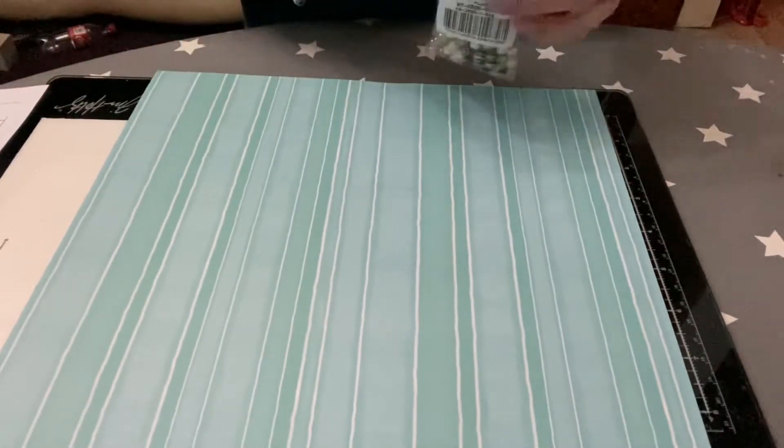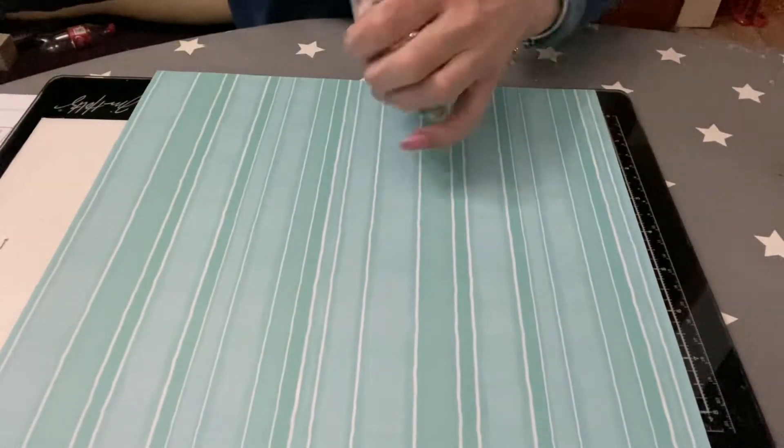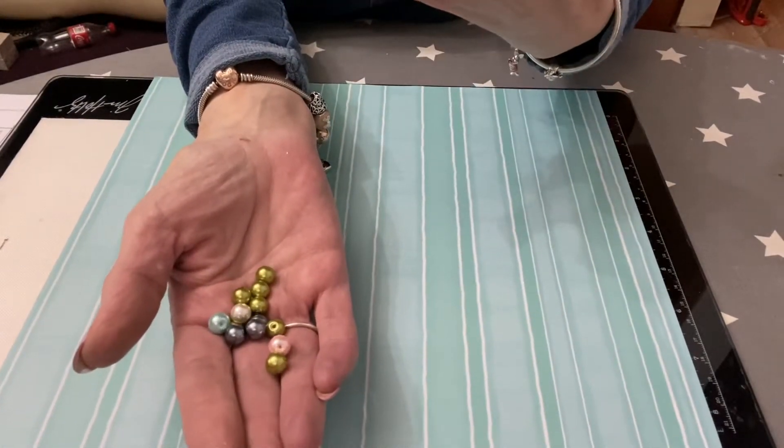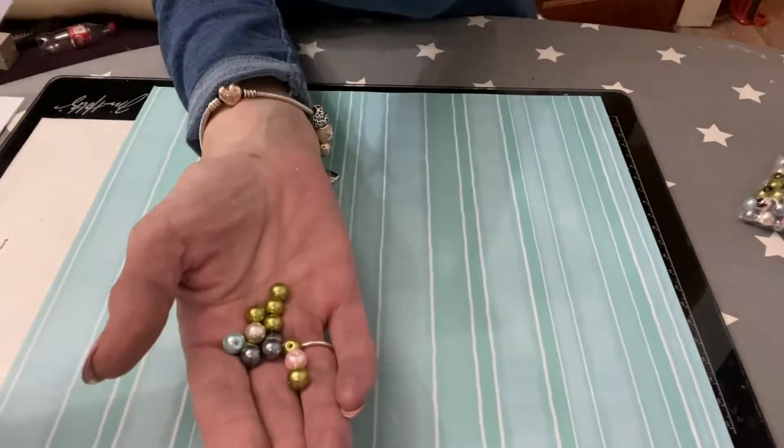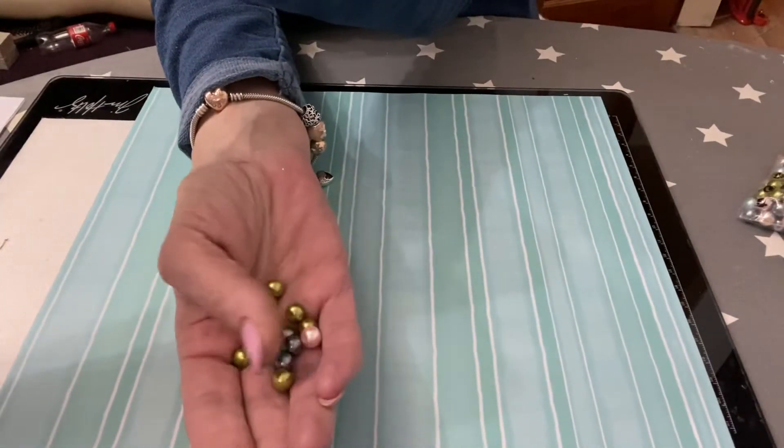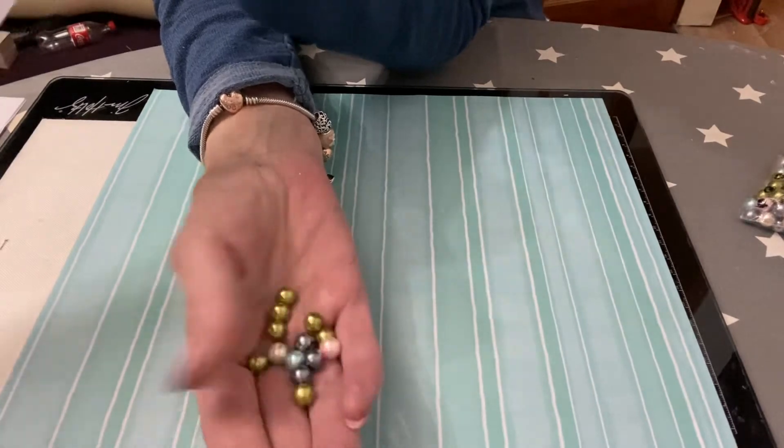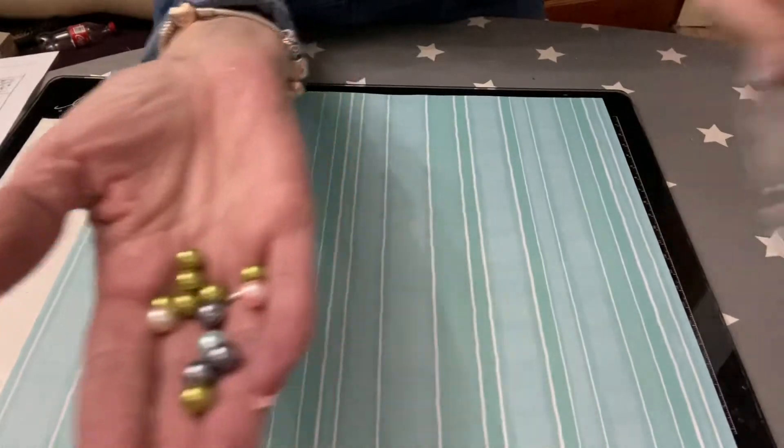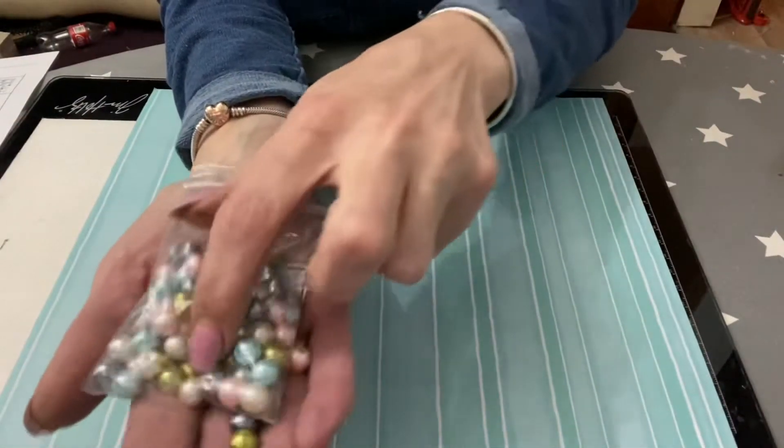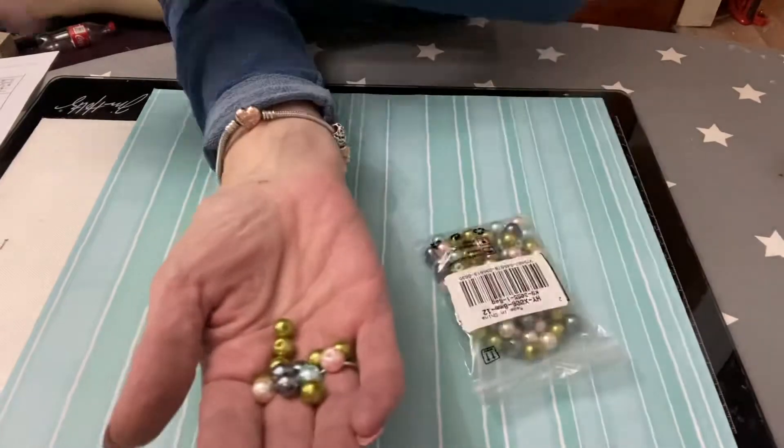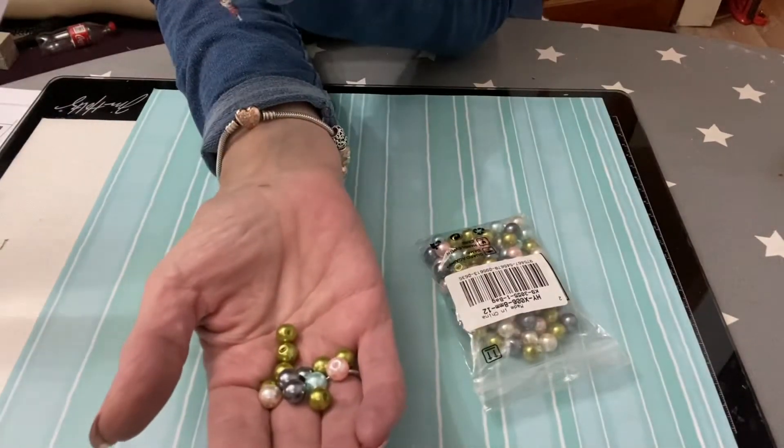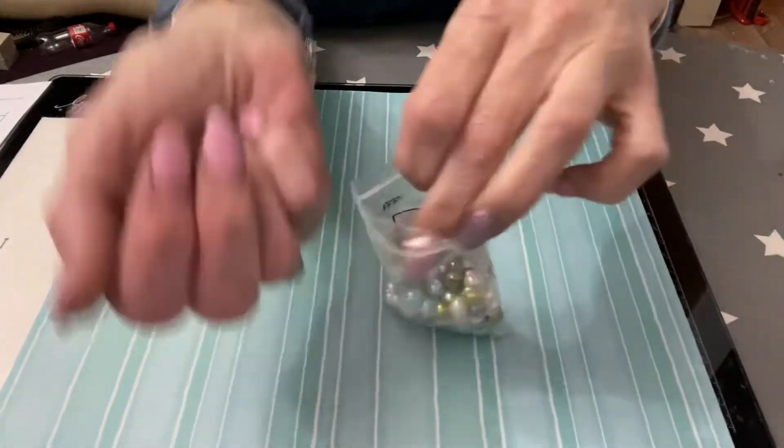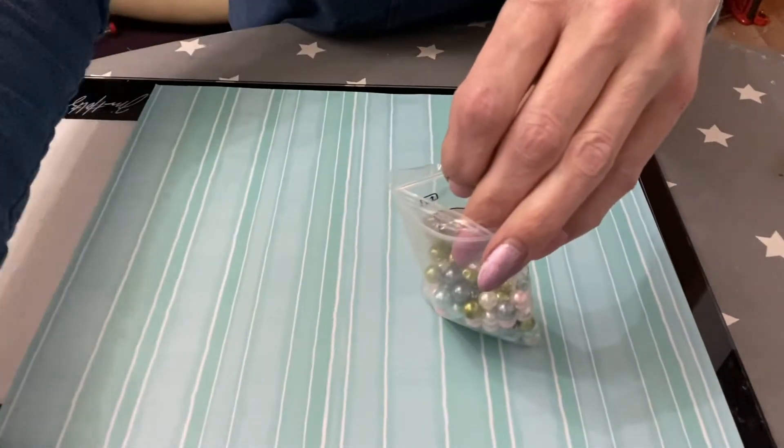The next item that I got were these pastel bead mix. Now these are 8mm and there is approximately 100 in the bag. They're all lovely little colors, so you've got lovely pastel colors there and they're all pearlized and they are 77 pence for the bag of 100.